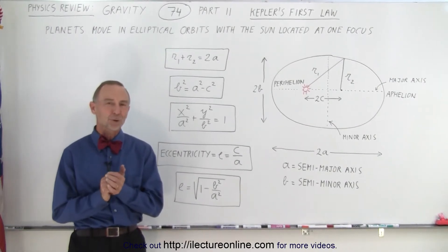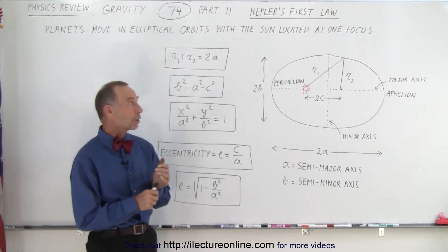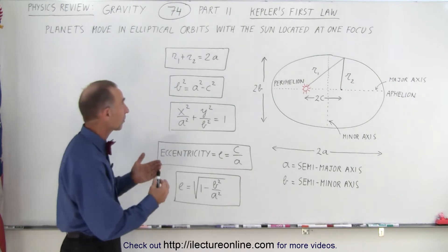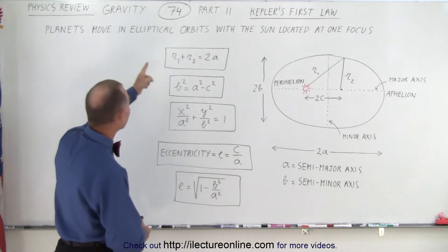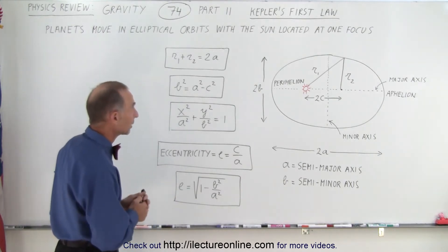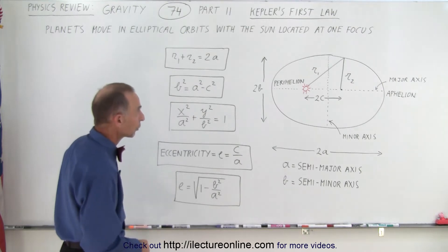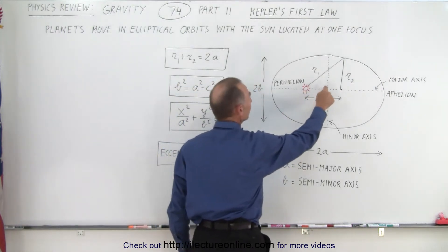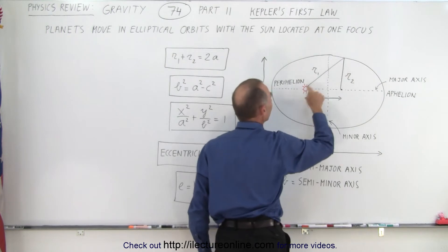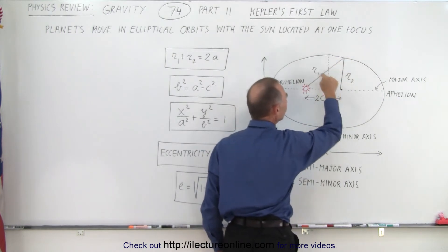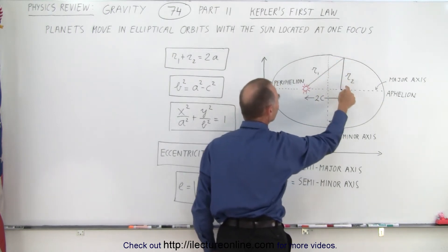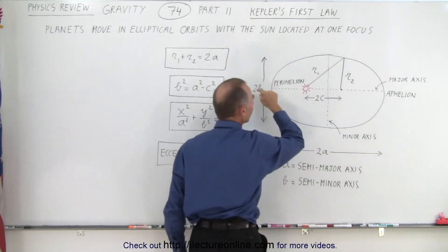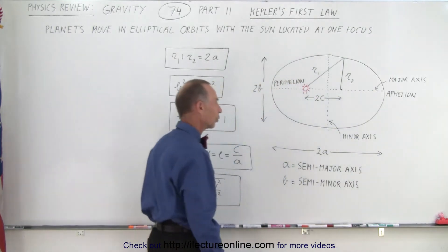Welcome to our LecterOnline. Here we have a quick overview of Kepler's first law. The first law means that planets move in elliptical orbits with the sun located at one focus. Here we have the two foci, and the distance between the planet and the sun and the planet and the other focus — those two added together equal the distance across the long portion of the elliptical orbit.